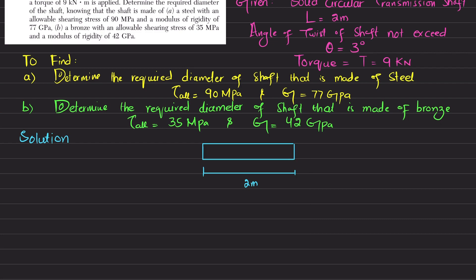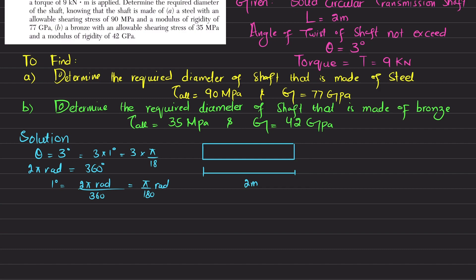The angle of twist theta must not exceed 3 degrees. We know that 2π radians equals 360 degrees, so 1 degree equals 2π/360 = π/180 radians. Therefore 3 degrees equals 3 × π/180 = 52.360 × 10⁻³ radians. The torque given is T = 9 kN·m = 9 × 10³ N·m, and length L = 2 m.